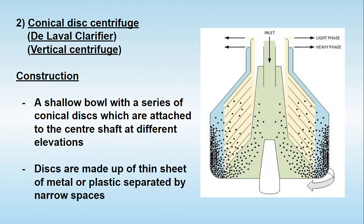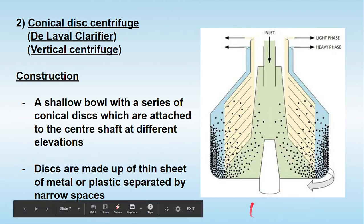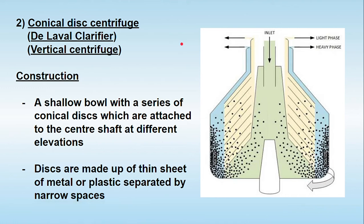The second type is the vertical centrifuge, in which the basket rotates vertically at a right angle. This type is also known as the conical disc centrifuge due to its disc structure, and it is known as a de-Laval clarifier. Clarification refers to the removal of a small percentage of solids. If the liquid contains a small amount of fine solids in the micron size range, they can be separated using this centrifuge.